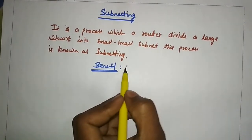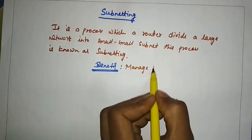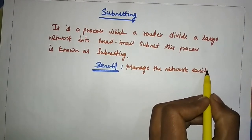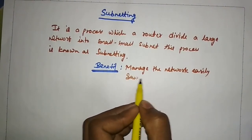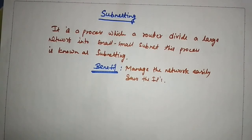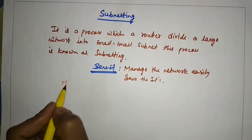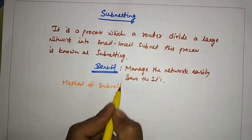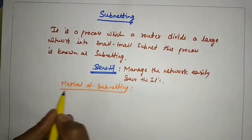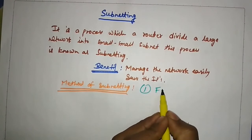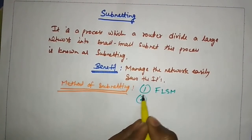The benefit of subnetting is that it helps manage the network easily. An administrator can manage such a network, and it also saves IPs using IPv6. There are two methods of subnetting: first is FLSM, and second is VLSM.